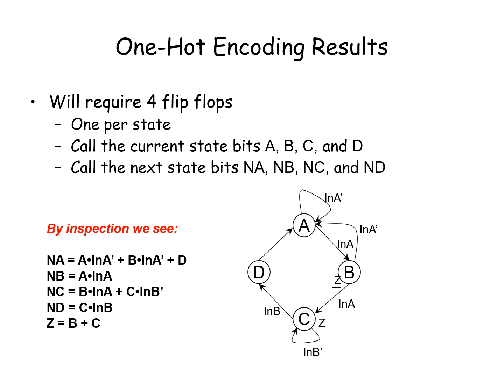So, here we require four flip-flops because each bit there is one flip-flop, one per state. Call the current state bits A, B, C, D. Call the next state bits NA, NB, NC, and ND.